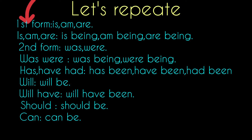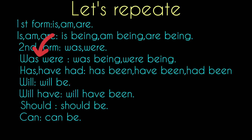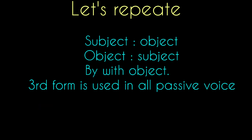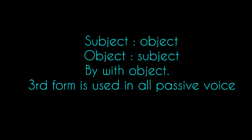Let's repeat: First form → 'is/am/are' + third form. 'Is/am/are' → 'is being/am being/are being'. Second form → 'was/were'. 'Was/were' → 'was being/were being'. 'Has/have/had' → 'has been/have been/had been'. 'Will' → 'will be'. 'Will have' → 'will have been'. 'Should' → 'should be'. 'Can' → 'can be'. Subject into object, object into subject, use 'by' with object, and third form is used in all passive voice sentences.